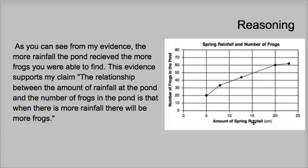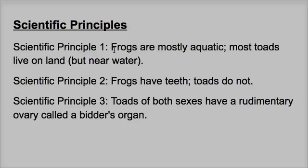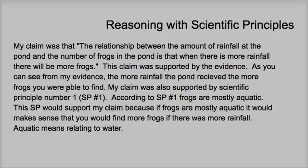If frogs are mostly aquatic, that leads me to think they like water. So it would make sense that they would live in a pond, and if you have more water it's going to be able to support more frogs. Scientific principle number one supports my answer. So this is how I rewrote the reasoning using scientific principles. My claim was that when there is more rainfall there will be more frogs, which I basically restated — you should do that whenever you write the reasoning.